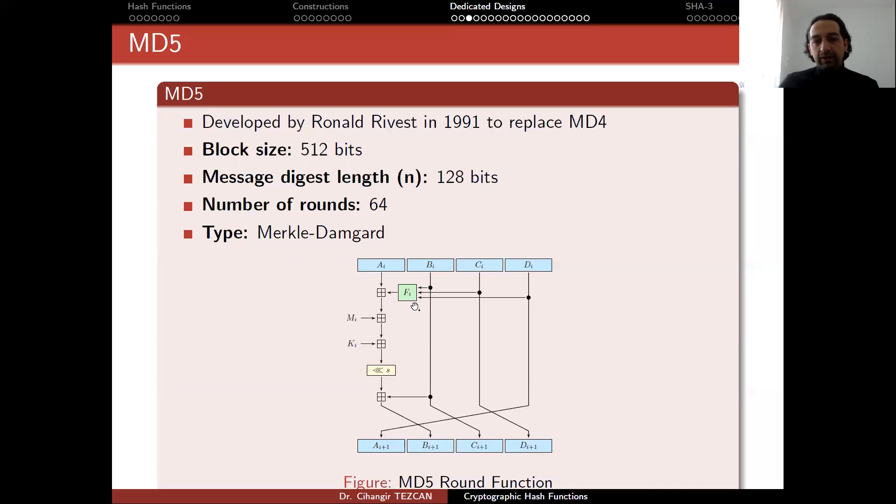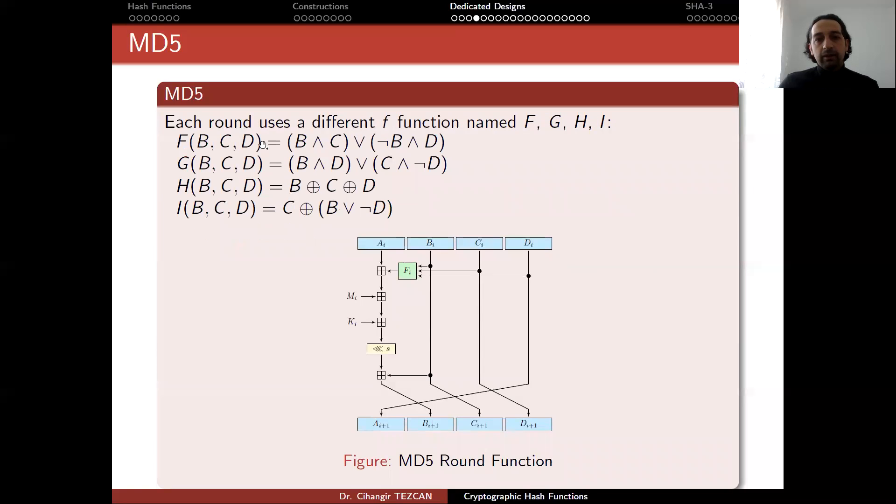So let's look at what is inside this F. So you take three words as input BCD. And for every 16 rounds, the F function works like this. In the first 16 rounds, it is B and C or not B and D. And in the next 16 rounds, it becomes a G function, and so places and some operations change. In the third version, it is just XOR of values and so on and so forth. So a very simple design.